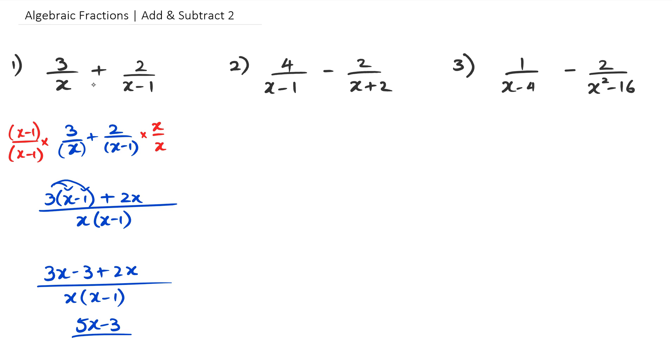And the whole thing is over x multiplied by x minus 1. So 3x plus 2x is 5x, so I'm going to get 5x minus 3 over x times x minus 1. Now you can actually leave the denominator without expanding it, so you can just leave it like that. That's fine, but if you want to expand it that's also not a big problem.